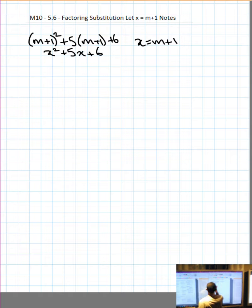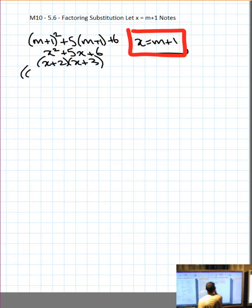Then we just factor. So we get x plus 2, x plus 3. Two numbers that multiply to get 6 and add to get 5 are 2 and 3. Now we have to carefully take what we made for x and put it back in, so we have to substitute with brackets.